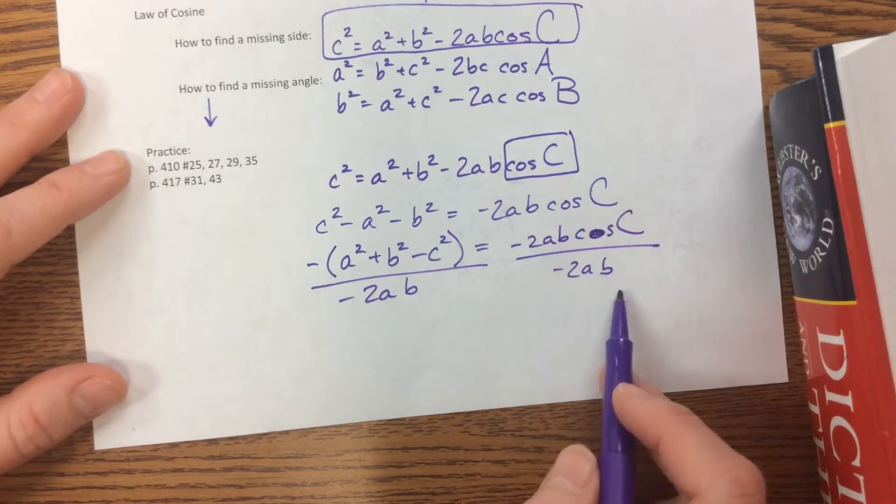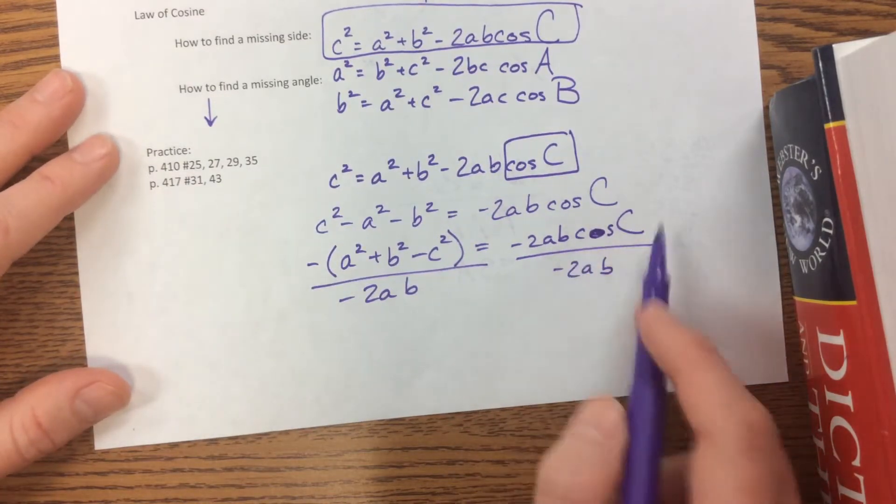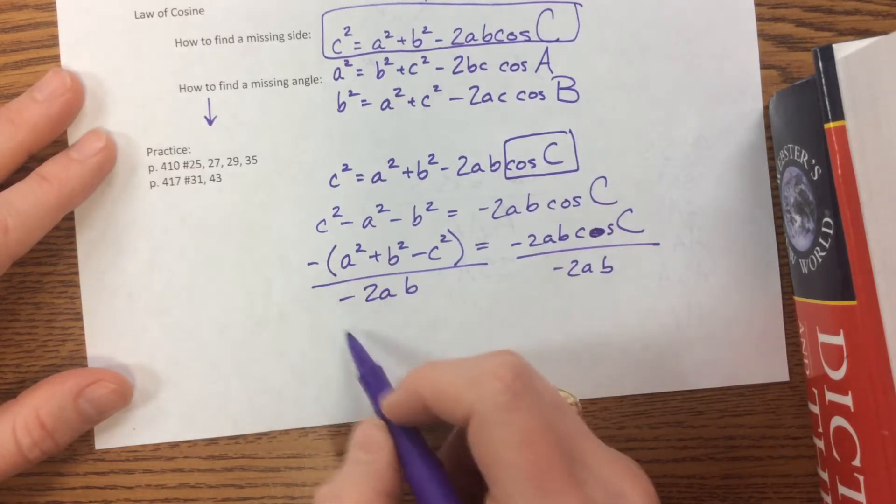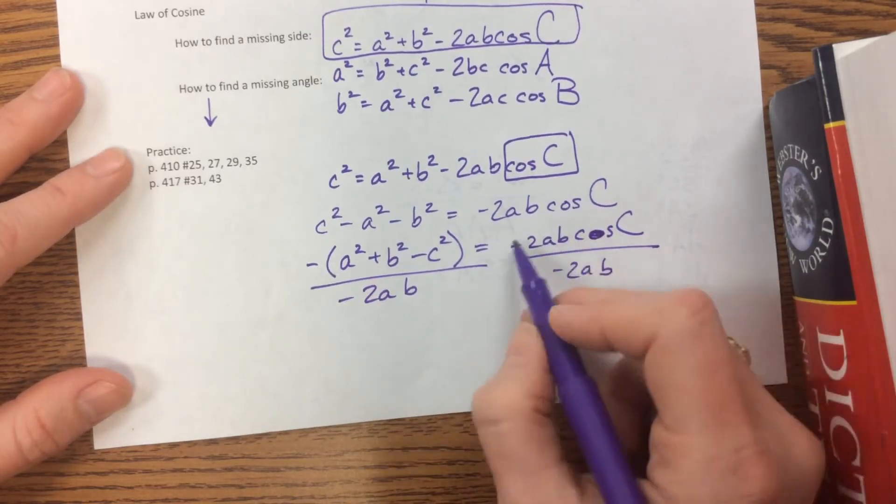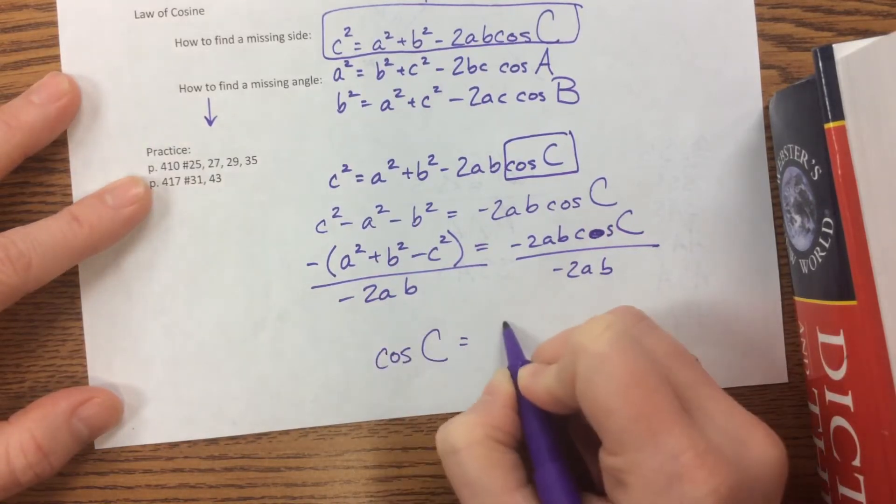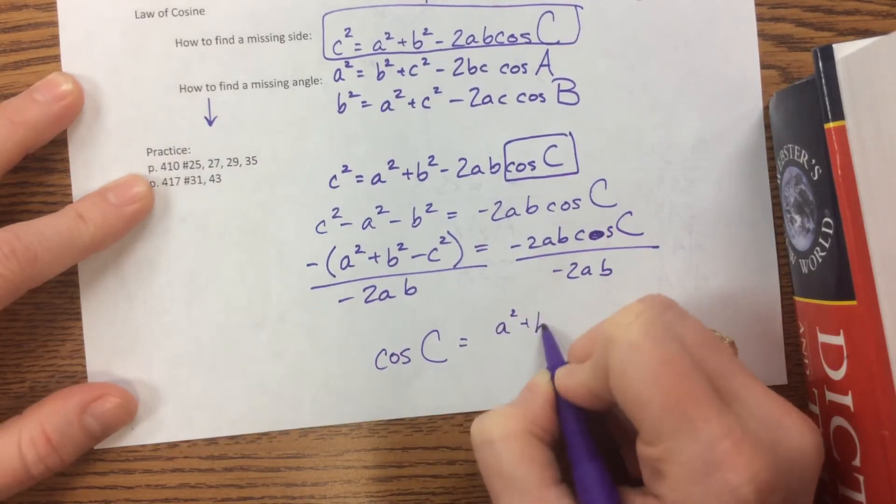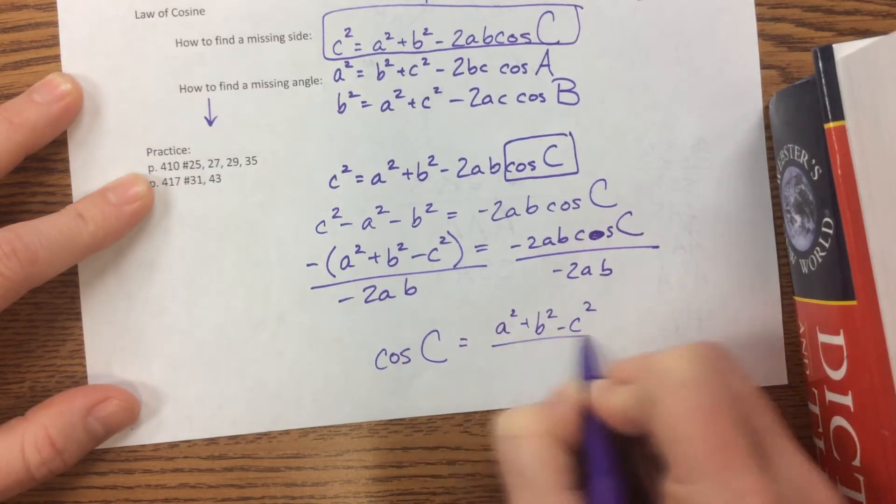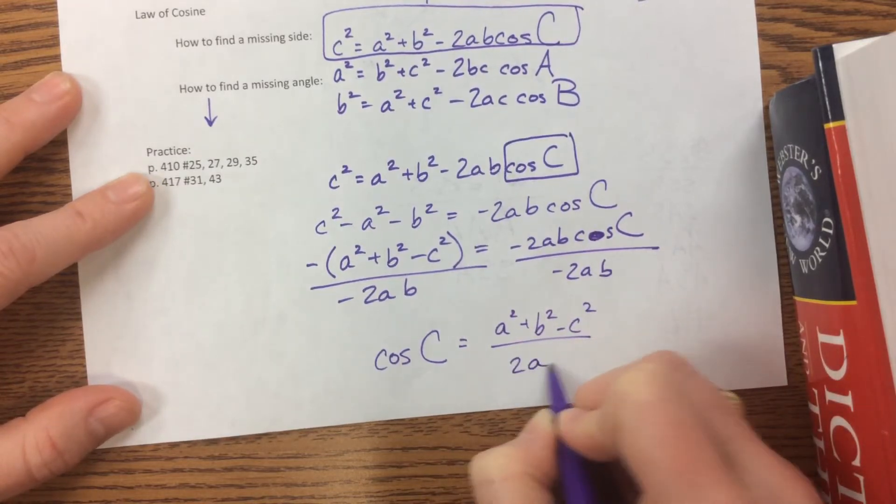Yeah, negative 2ab, cosine c, divided by negative 2ab, so that I can get cosine c by itself. Notice the negatives are going to cancel each other out, and all of this, we're left with a mess, but we're left with cosine of c is equal to a squared plus b squared minus c squared over 2ab.